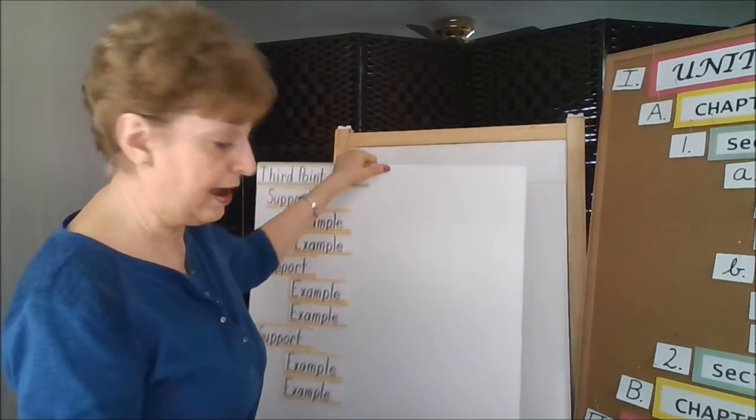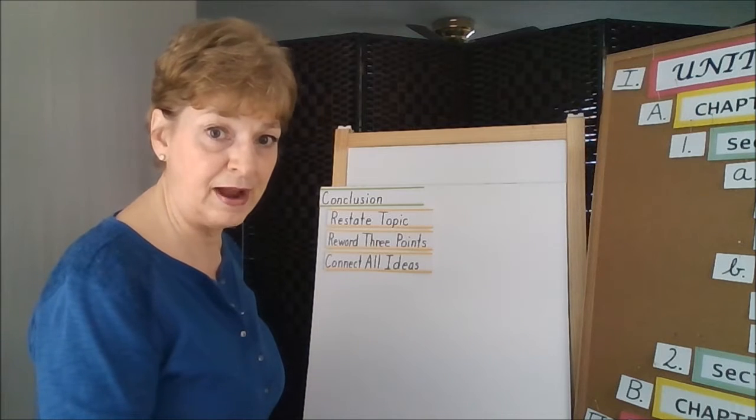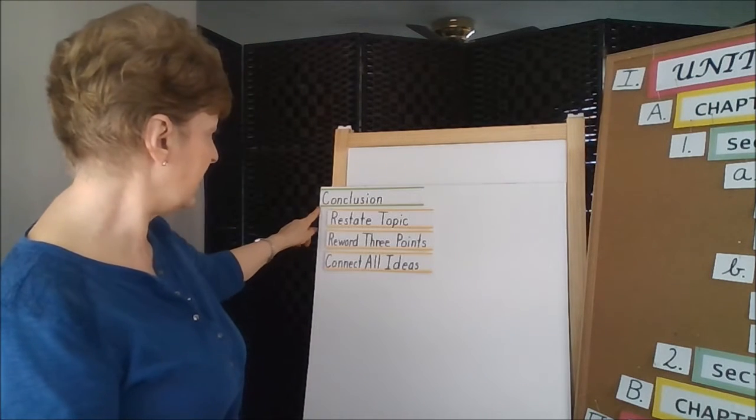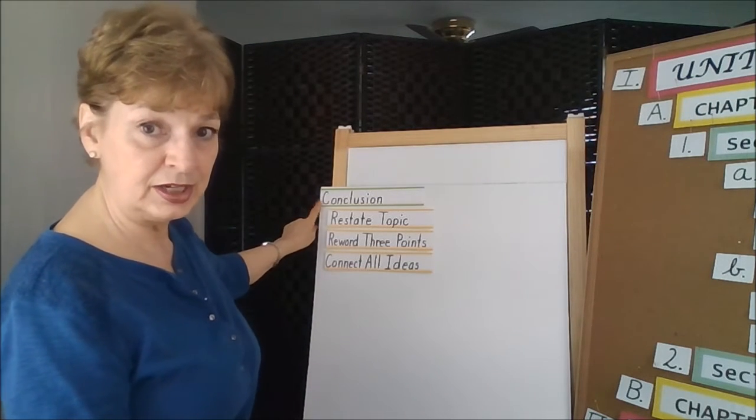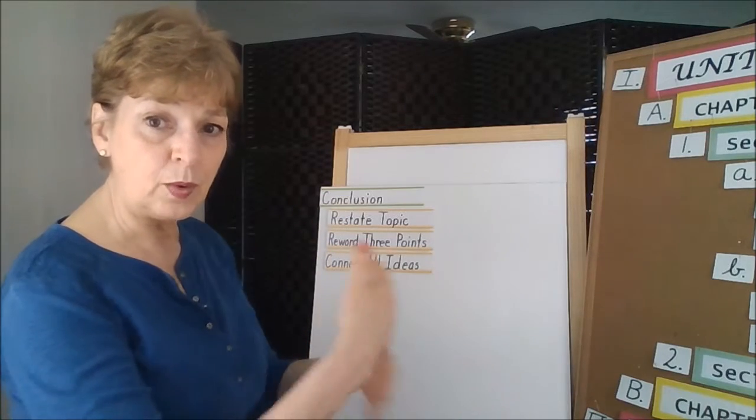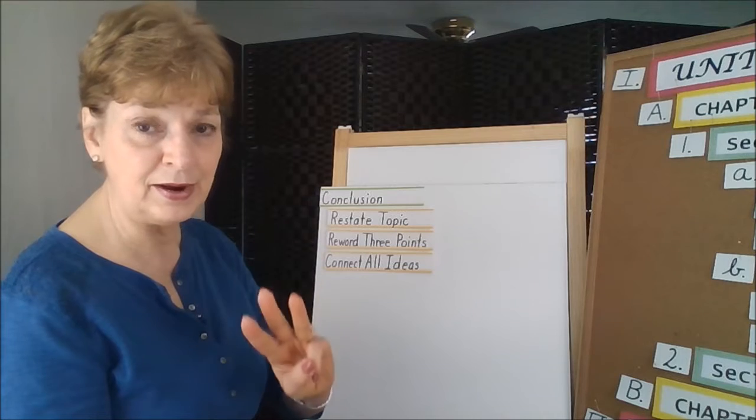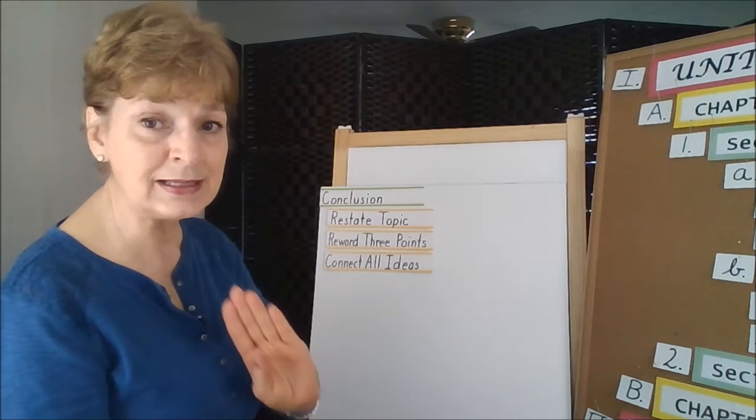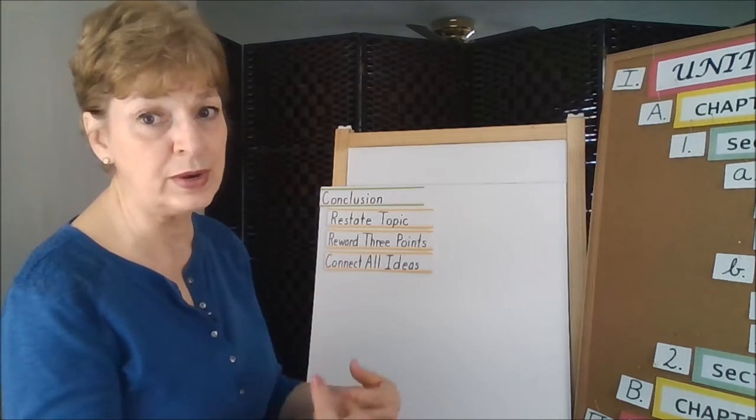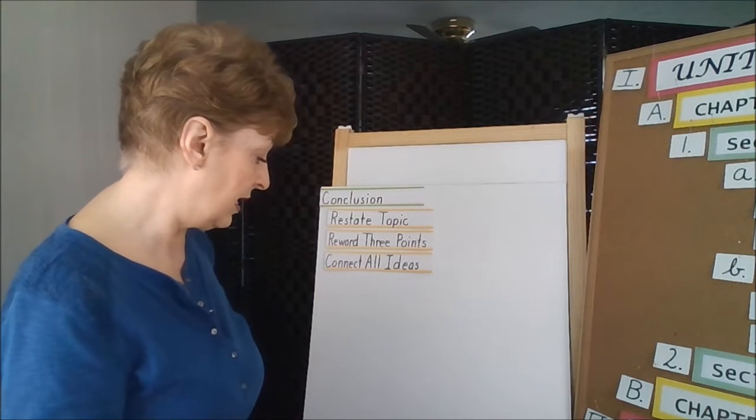And the fifth paragraph in the five paragraph essay is a conclusion. The conclusion or summary wraps it up. It ties together the three body paragraphs, and it's basically a reiteration or a restatement of the introduction.